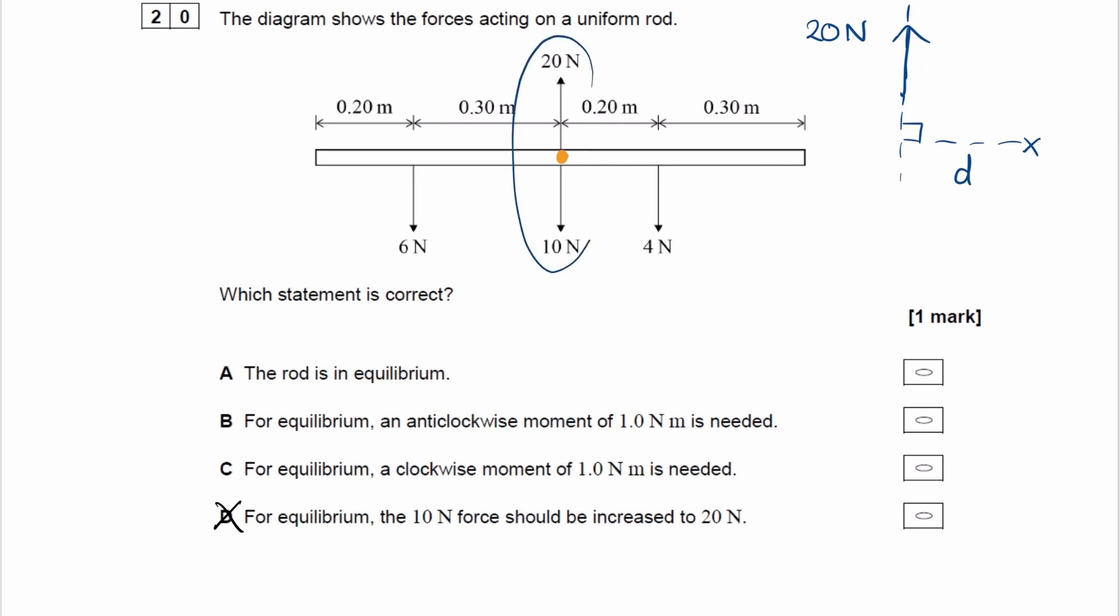There is no perpendicular distance from these forces to the pivot because the line of action of the force, which is what I drew as this dashed line here, and now I'm drawing it here, the line of action of the force goes through the pivot, and so therefore there is no perpendicular distance to that pivot point.